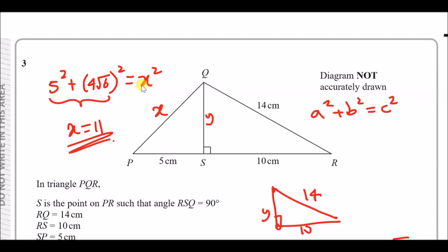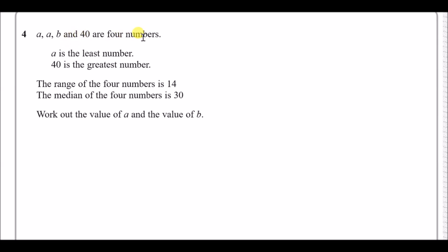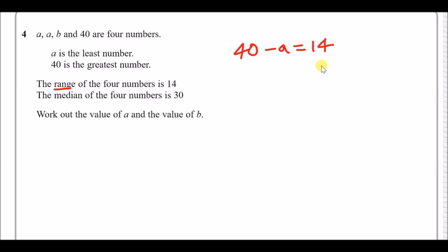Number four: a, a, b, and 40 are four numbers. A is the least and 40 is the greatest, so the order is a, a, b, 40. The range of the four numbers is 14, meaning the difference between the highest and lowest: 40 minus a equals 14. So a equals 40 minus 14, which gives a equals 26.